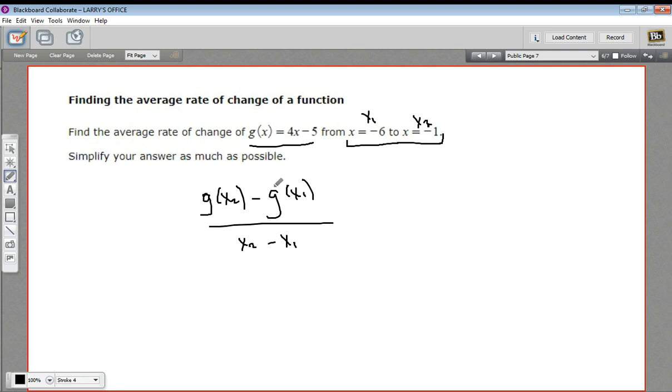So we need to actually figure out g of x2 and g of x1. So x1 is negative 6. We can plug this in here. Negative 6 times 4 is negative 24, minus 5 is negative 29. So g of x1 is negative 29.